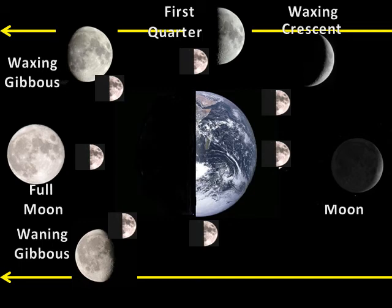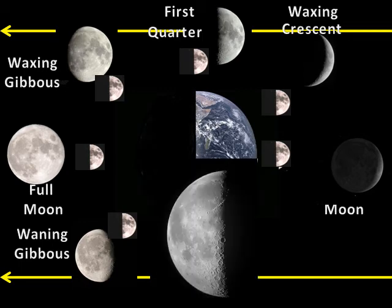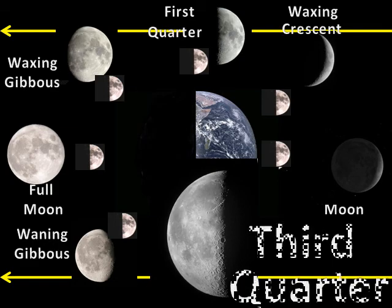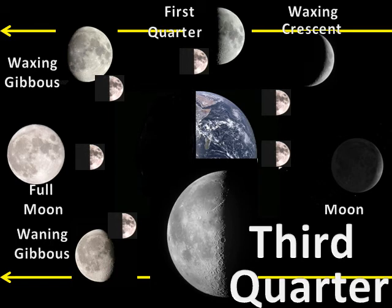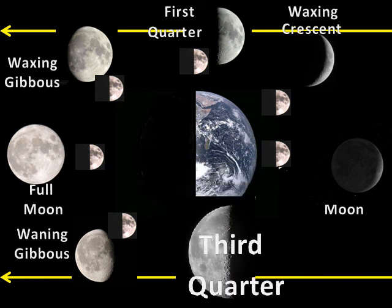Now the moon reaches this point in its journey. The moon has completed three-fourths of its orbit. We call this moon the third quarter or the last quarter. This moon also makes a right angle with the line segments running from the moon to the earth and from the earth to the sun. A straight line can be drawn down one side of the moon. The third quarter moon.